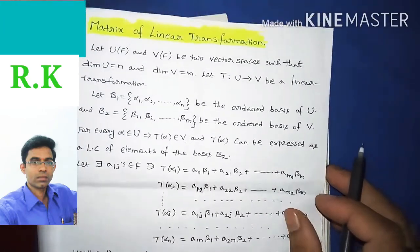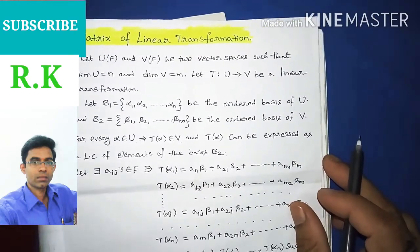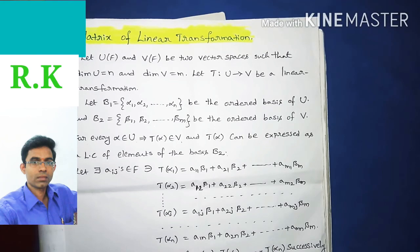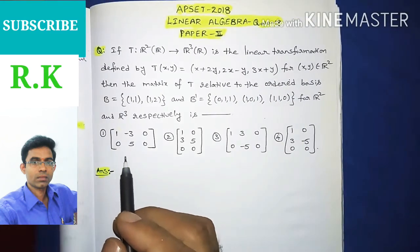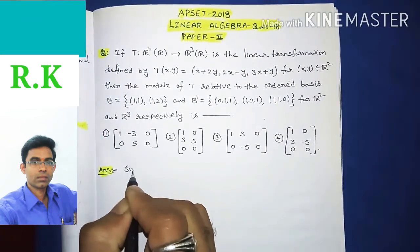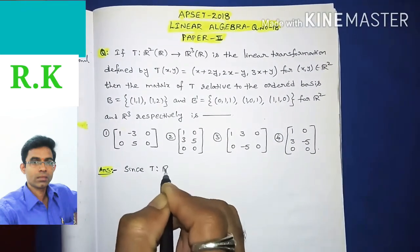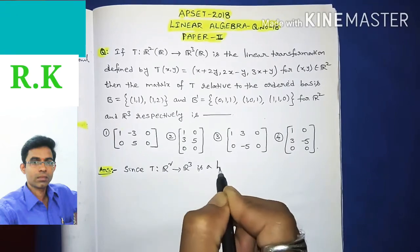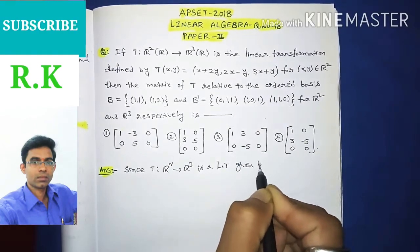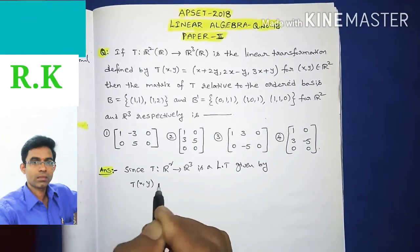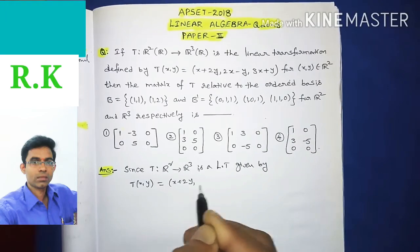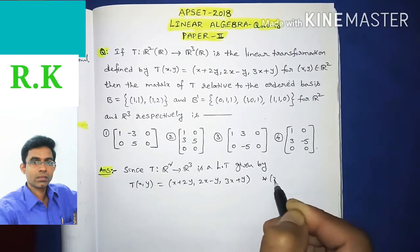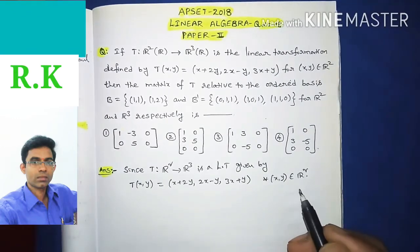This is the concept of matrix representation of a linear transformation with respect to a given ordered basis. Using this concept we will solve the given question. Since T is a mapping from R² to R³ is a linear transformation given by T(x, y) = (x + 2y, 2x − y, 3x + y) for all (x, y) in R².